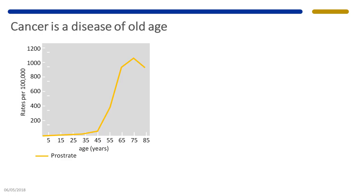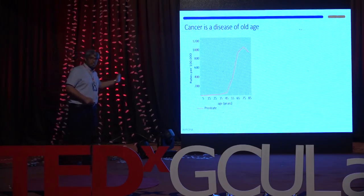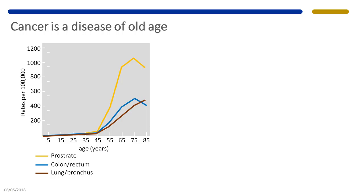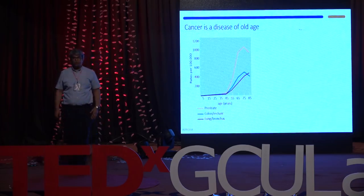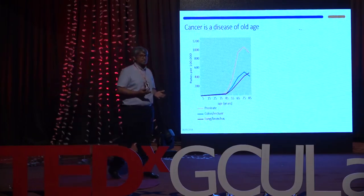Similarly, our bodies accumulate genetic defects over the years. A graph showing prostate cancer rates plotted against age demonstrates that as age increases, the rate of prostate cancer increases — and similarly for colon and lung cancer. Before the age of 45, there are very few cases of these cancers, but as age increases, the incidence rises significantly.